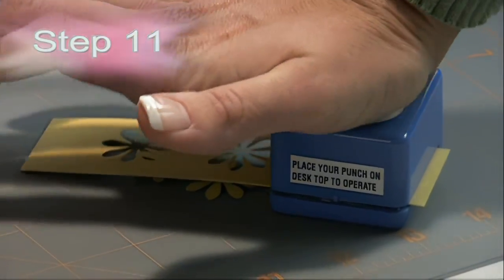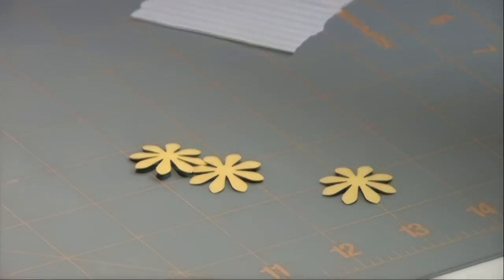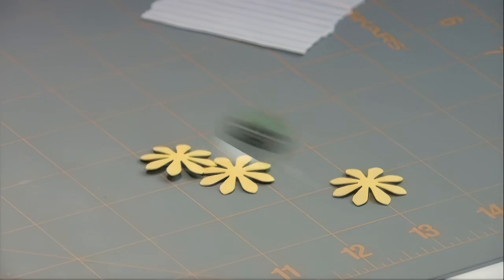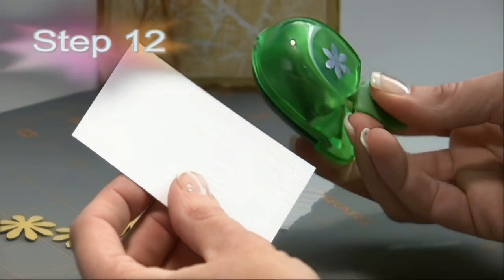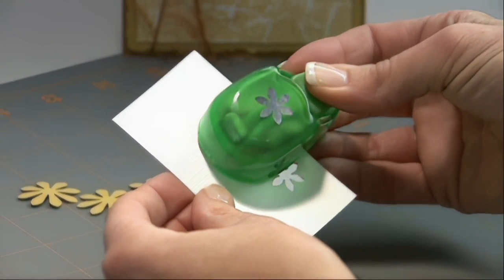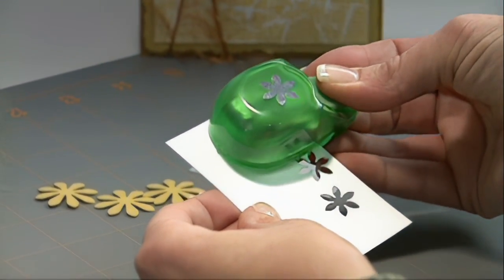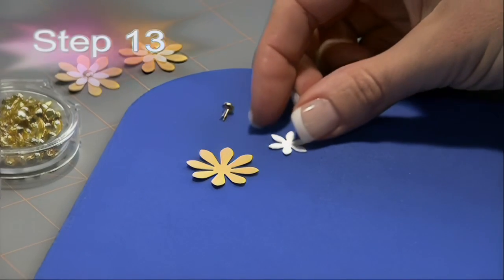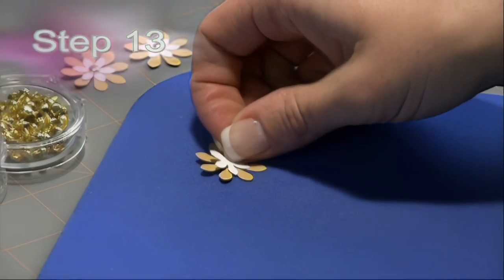Using a large daisy punch we're going to punch out 3 daisies out of our yellow card stock. Next we will use a thumb punch to punch out 3 small daisies out of white card stock. Now it's time to make our daisy accents.